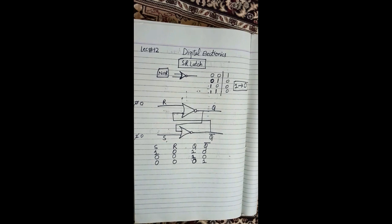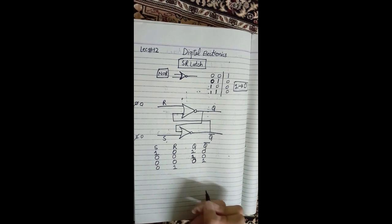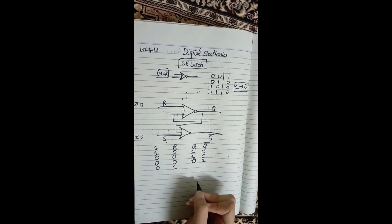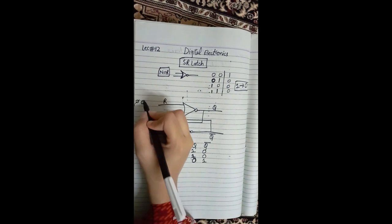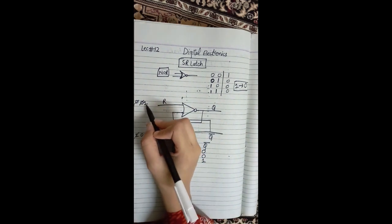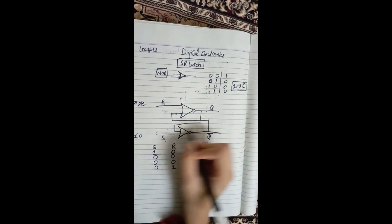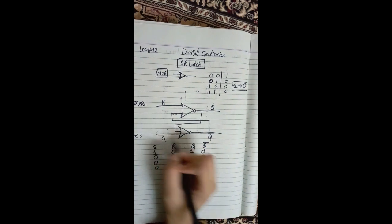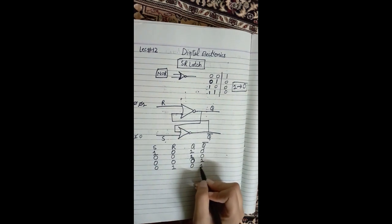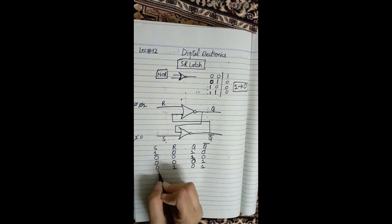When S=0 and R=1: since R has a 1 input, the output of the R NOR gate will be 0, so Q=0. With Q=0 and S=0, both inputs to the S gate are 0, so the output is 1 — Q̄=1. This is the Reset state.